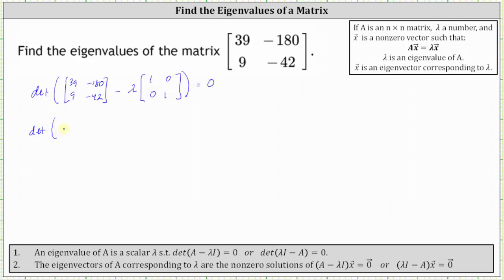This gives us the determinant of the two by two matrix where the first entry is 39 minus lambda. The second entry in row one is negative 180 minus lambda times zero, which gives us negative 180. In row two, the first entry is 9, and the second entry is negative 42 minus lambda.